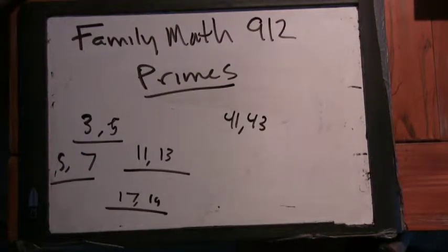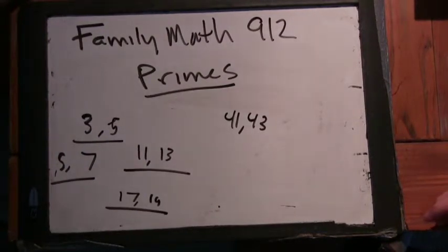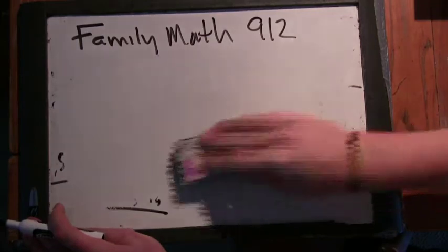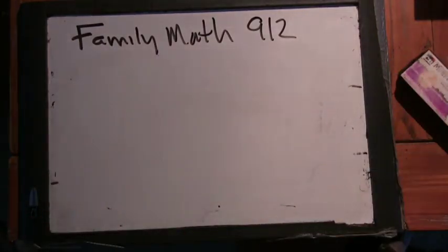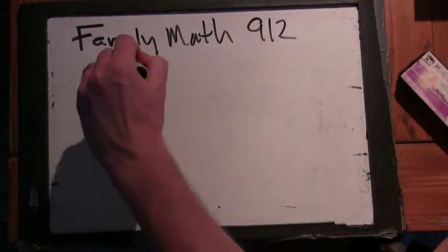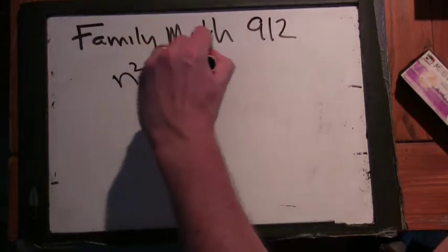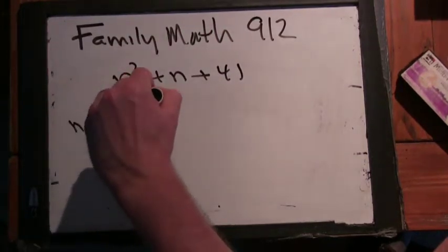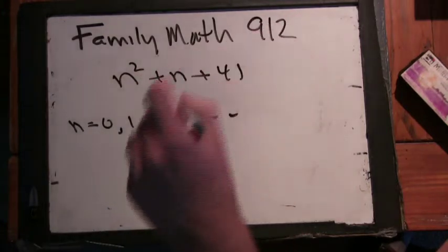Okay, so you happen to be learning about quadratic polynomials right now in your algebra class and your algebra studies. I'm going to ask you to look at this polynomial: n squared plus n plus 41 for n equals 0, 1, 2, 3, and so on.